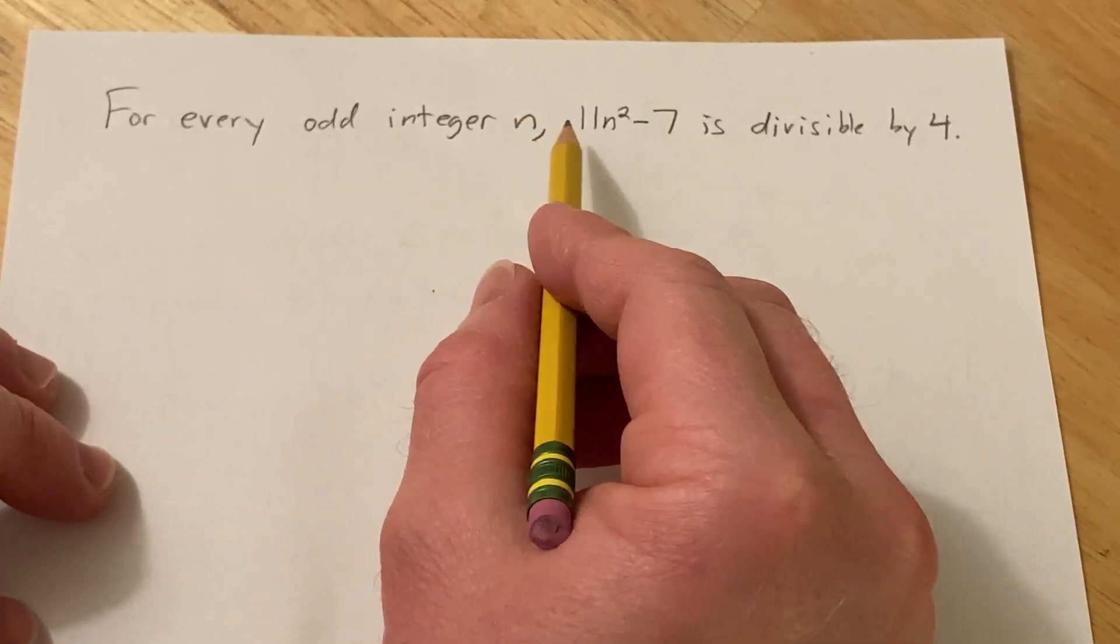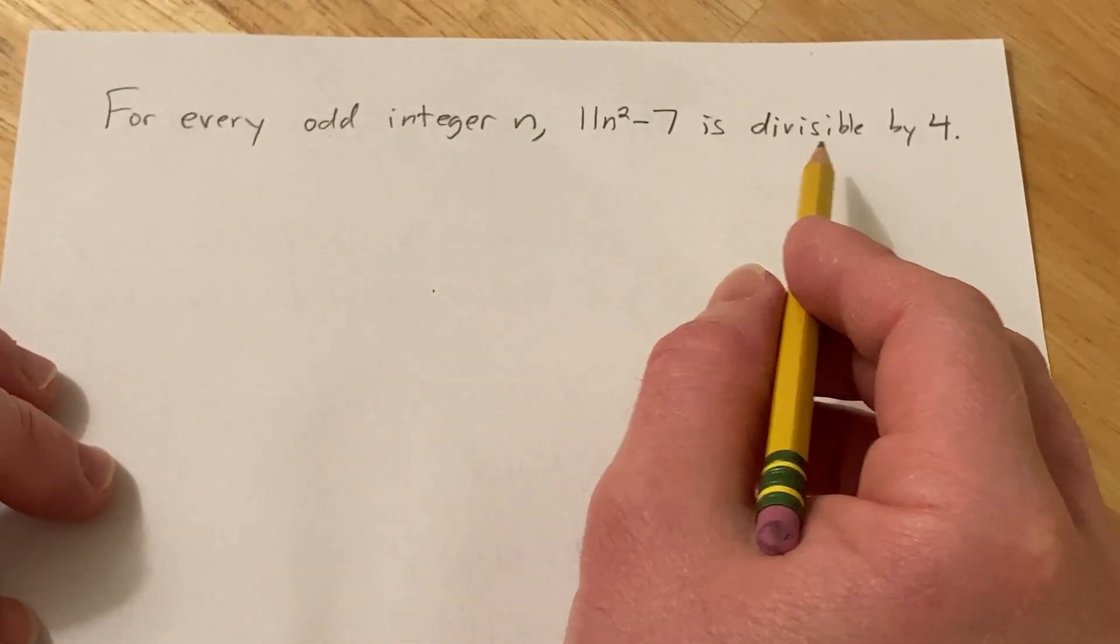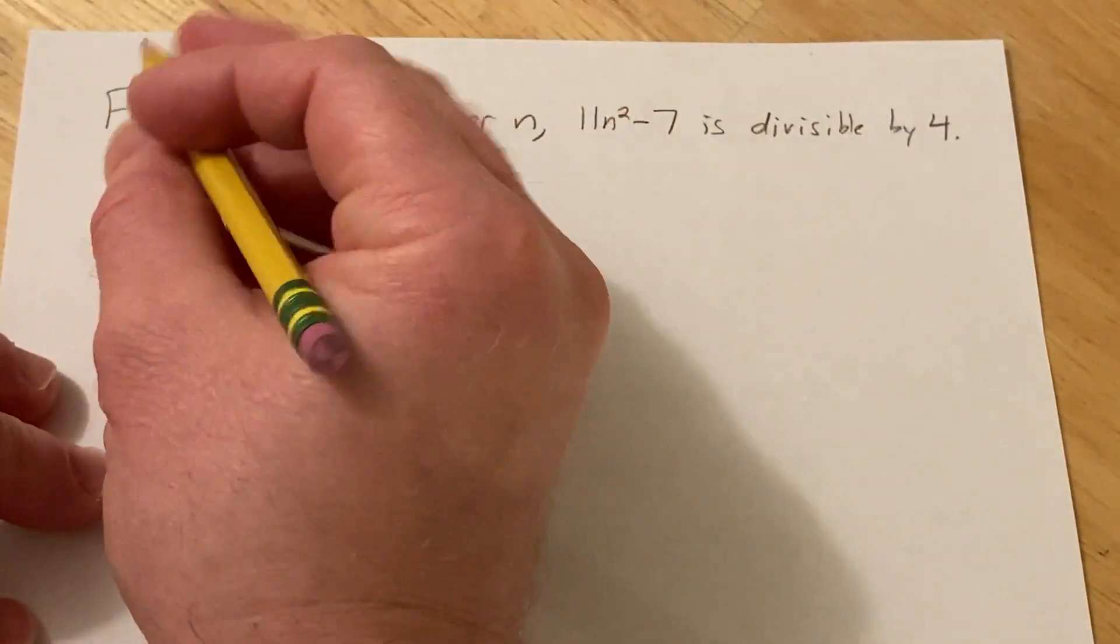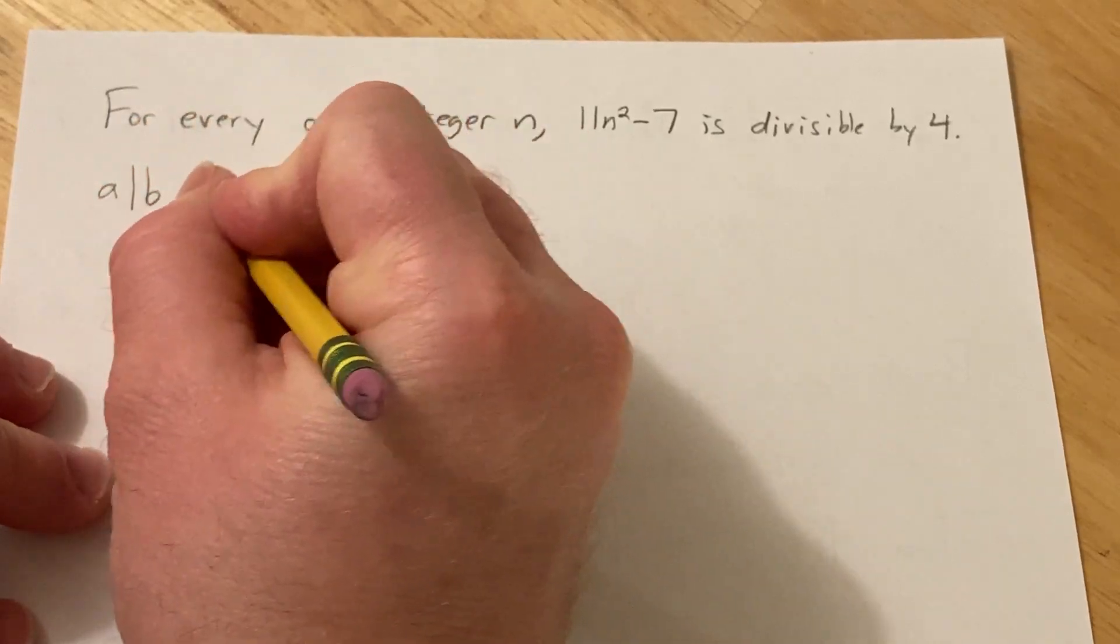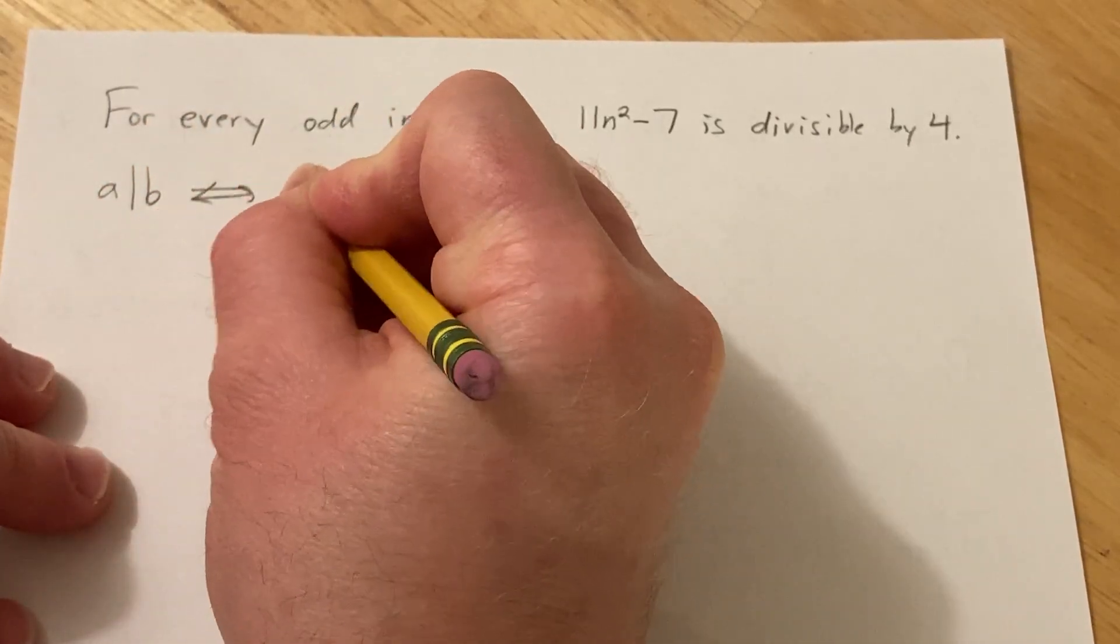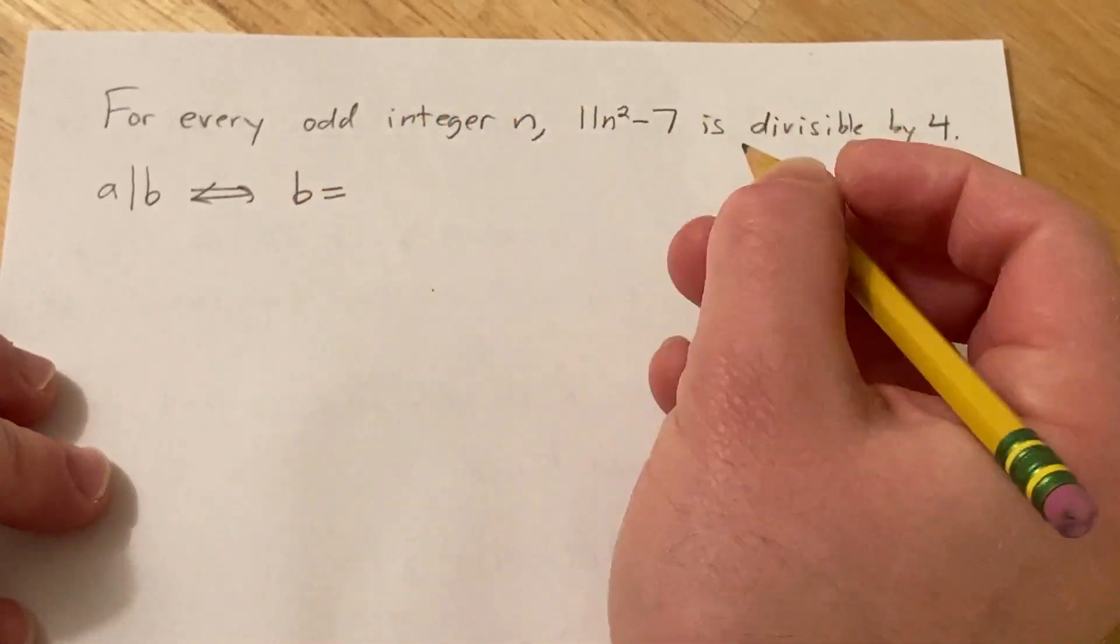So first let's recall what we mean by an integer being divisible by 4. So we say that a divides b, this is equivalent to saying that b is a multiple of a.